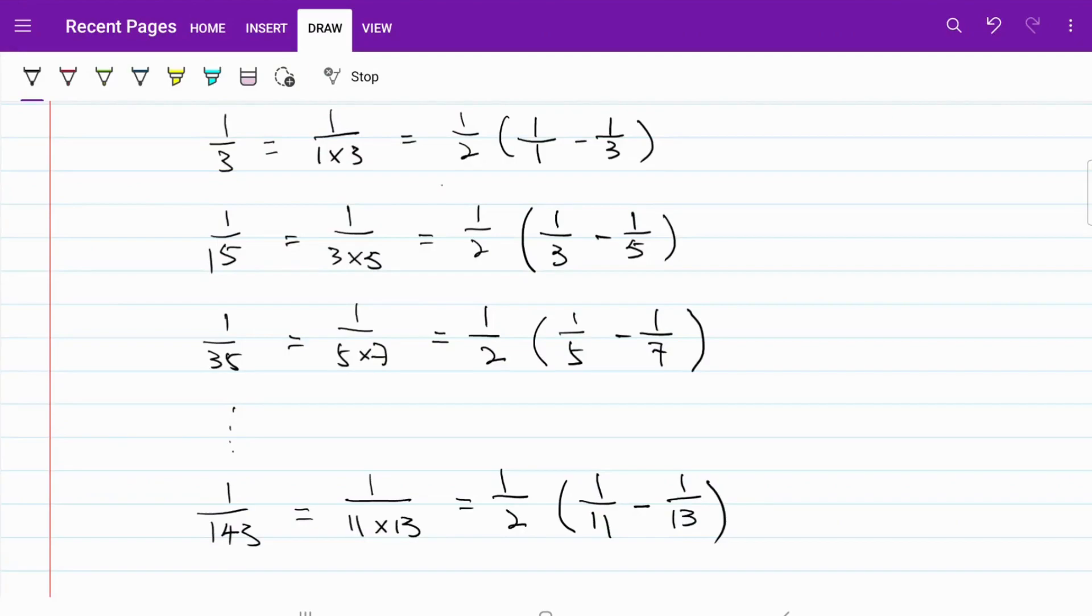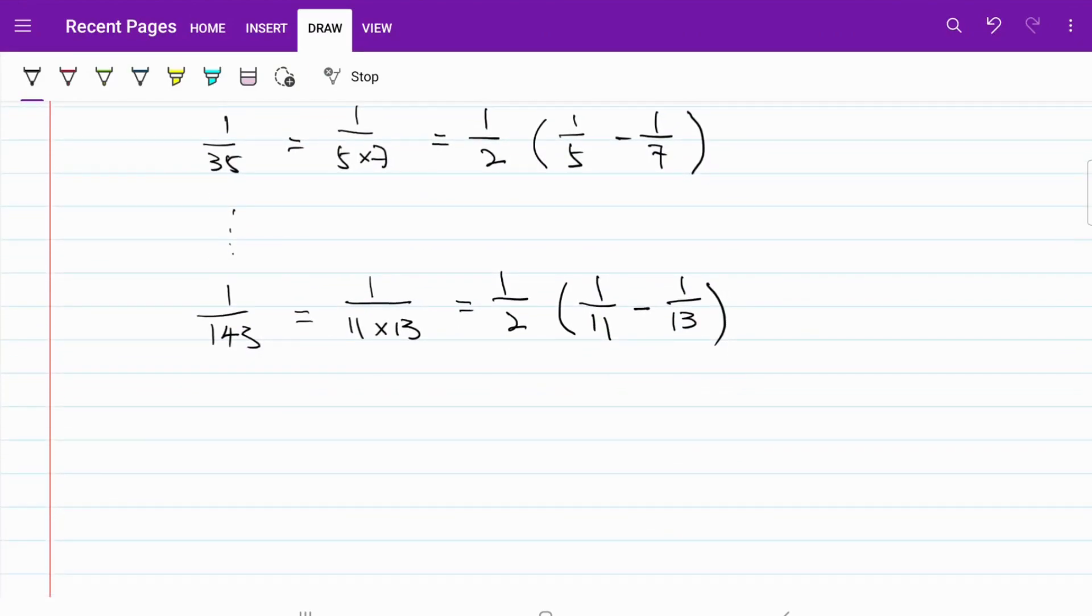Again, let me copy down my fraction series. I have 1 over 3 plus 1 over 15 plus 1 over 35 plus 1 over 63 plus 1 over 99 plus 1 over 143 multiplied by A is equal to 12. So if we just focus on the fraction series and we make use of the pattern that we just established,